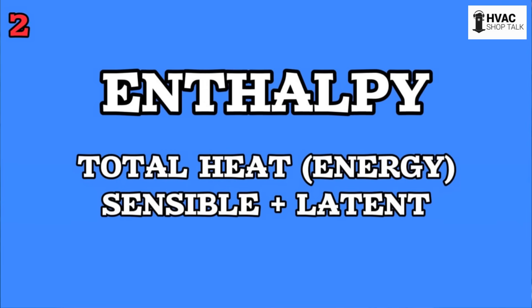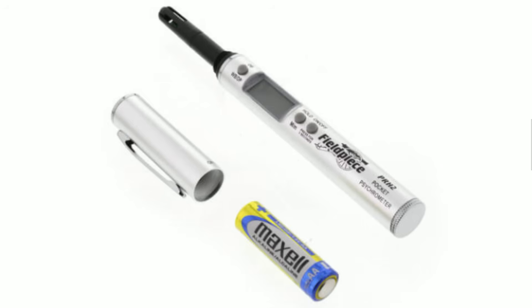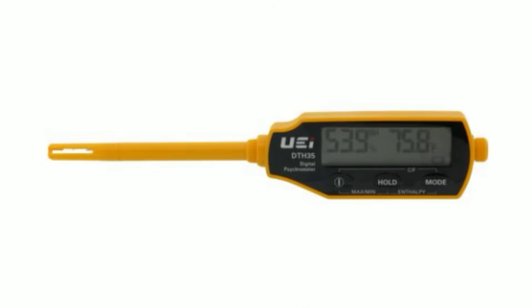Steve says you can just use MeasureQuick — that's exactly right. MeasureQuick takes a lot of this stuff and puts it right there on the screen for you, because not a lot of instrumentation measures enthalpy directly. You have to check things like the FieldPiece PRH2 pen-style hygrometer or the UEI DTH35 — I think those do enthalpy. Having something that measures enthalpy directly is really nice. And if you have one of these apps, sometimes it'll do the calculations for you, but you should still know what it's doing so you can recognize it even without the app — like a quick check where you notice something's not right.